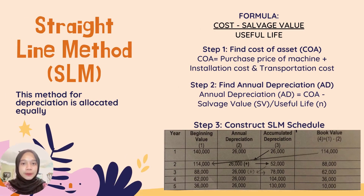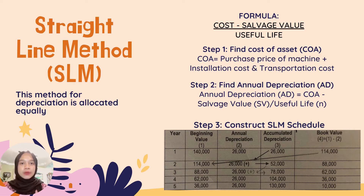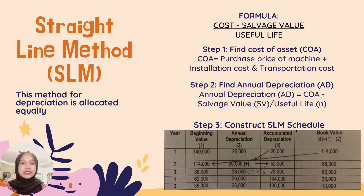Straight line method is the method where depreciation is allocated equally over the estimated life of the asset. The formula for this method is cost minus salvage value divided by useful life. Step one is to find the cost of asset — purchase price plus installation cost and transportation cost. Step two is to find annual depreciation — cost of asset minus salvage value divided by useful life. Step three, construct the straight line method schedule as shown in the table.